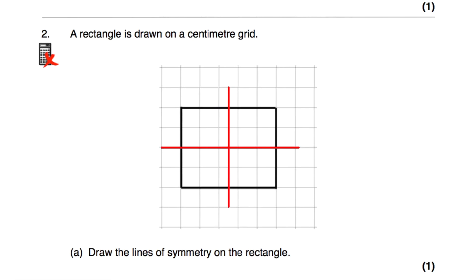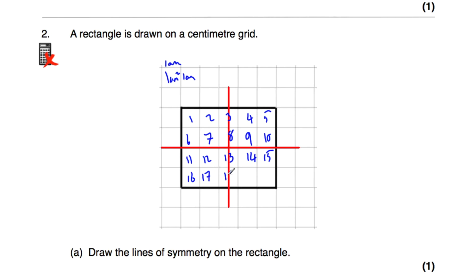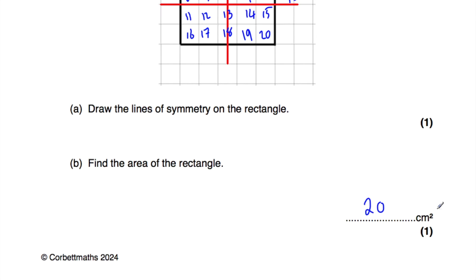Part B says find the area of the rectangle. Each square is one centimetre by one centimetre, so the area of each square is one centimetre squared. You could count the number of squares inside — counting gives 20 squares. Alternatively, the length of the rectangle is 5 centimetres and the width is 4 centimetres, and 5 times 4 equals 20 centimetres squared. So the area of the rectangle is 20 centimetres squared.